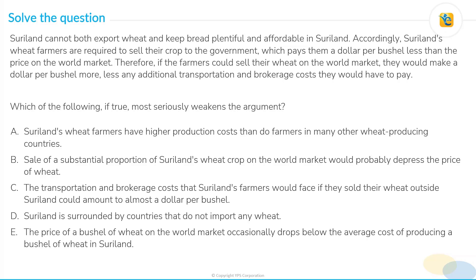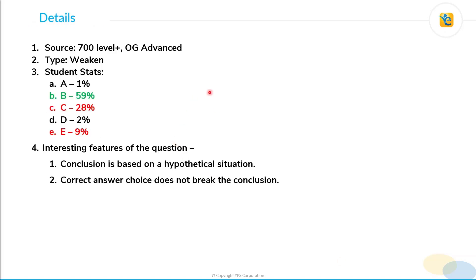Assuming that you have solved this question, let me start with the details. This is a 700-plus level OG advanced question — it is a weekend question. From the student stats, you can see that the correct answer choice is marked only by 59% of the students, and around 28% of the students go with the incorrect answer choice, which is choice C.